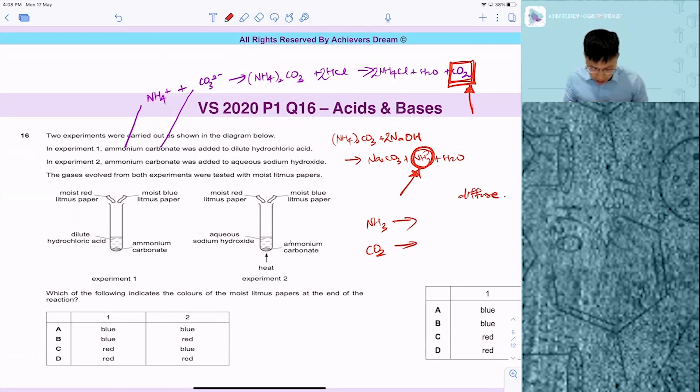In this case, which one will show the color? In this reaction, you release CO2. It's an acidic gas, and because it's an acidic gas, you're gonna get blue will turn red.